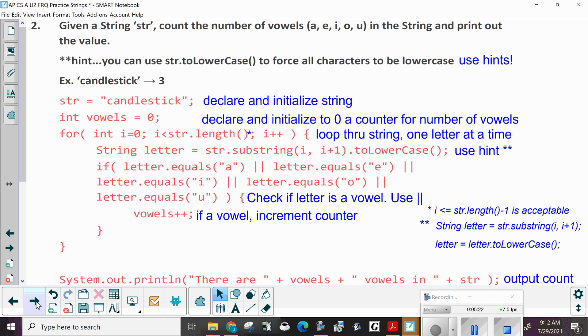Next up. Given a string, str, count the number of vowels A, E, I, O, U. We are not including Y. So A, E, I, O, U in the string and print out that value. Now here's a hint. You can use string dot to lowercase to force all characters to be lowercase. If they give you a hint, use the hint.